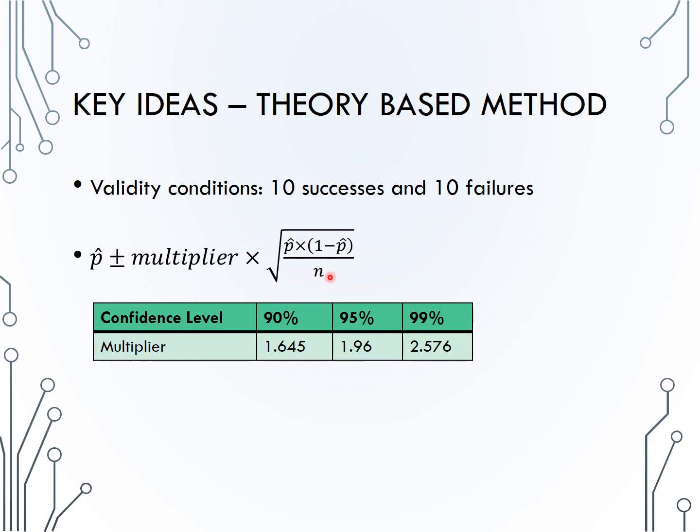The square root of p-hat times 1 minus p-hat over n is what we call the standard error of the sample proportions, or the estimated standard deviation of the sample proportions.